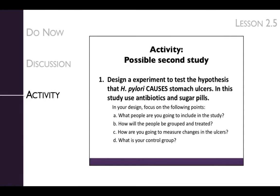For the H. pylori case study activity, have the students work in small groups to design an experiment to test the hypothesis that H. pylori causes stomach ulcers. In this study, the students can use antibiotics and sugar pills. Like with the homework, experimental design can be an overwhelming task for students, so don't be surprised if it takes a few minutes for students to engage in the process. If your students are stuck, have them step through the questions one at a time as a class.